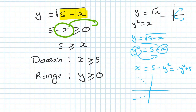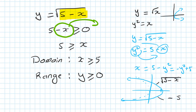When y equals 0, x is 5. So your graph goes this way. This upper part is square root of 5 minus x, and the lower part is negative square root of 5 minus x — because every time it's a square root, you get a plus and a minus. So this point here is 5. You can see x is less than 5, and y is above 0, so you can read the domain and range using this technique as well.